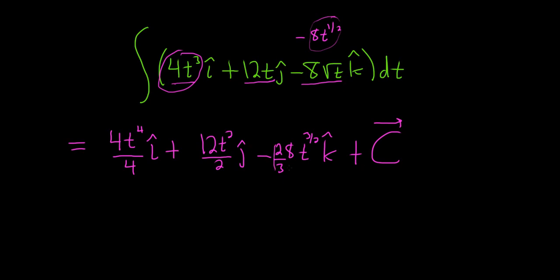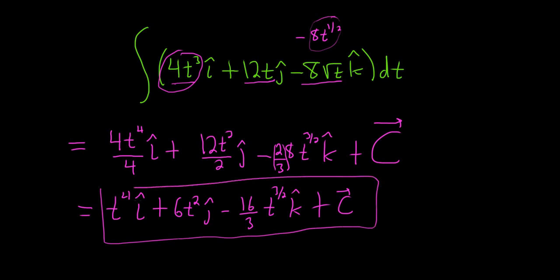Last thing to do is maybe just clean this up a little bit. So this is equal to t to the 4th i-hat plus 6t squared j-hat minus, and then 2 times 8 is 16, so 16-thirds t to the 3-halves k-hat. And then we have our capital C, which is our constant of integration. That is the final answer.